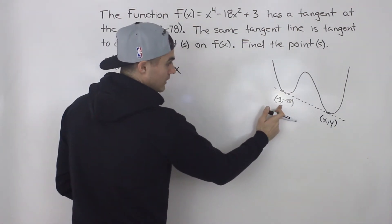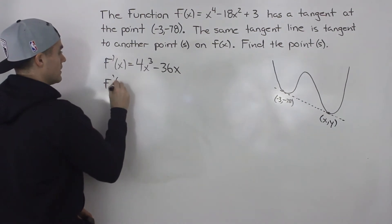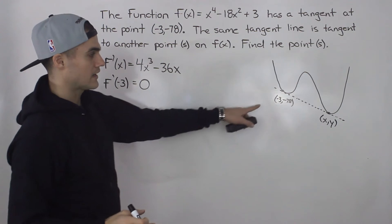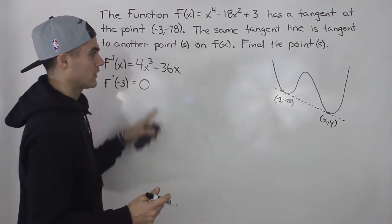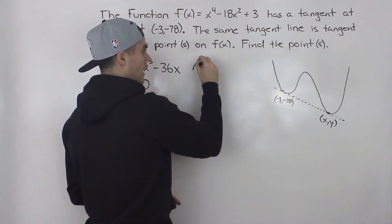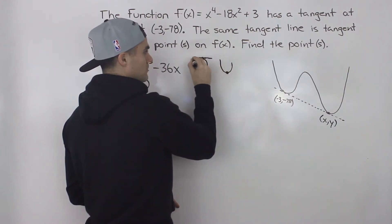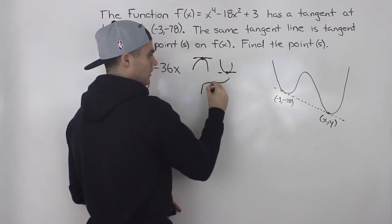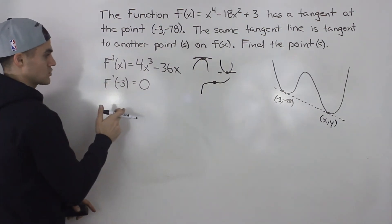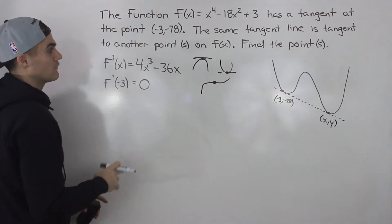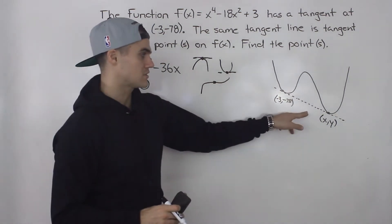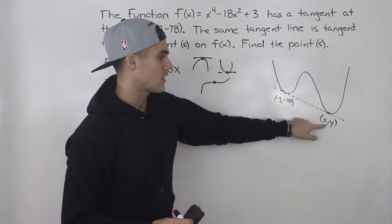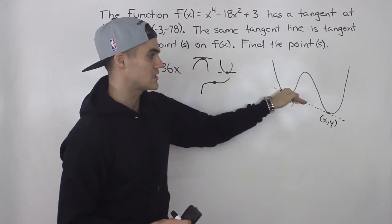Let's figure out the slope of the tangent at the point (-3, -78). If we plug in -3 into the derivative, we end up getting 0. So the slope of the tangent at that point is 0, meaning that point is most likely either a minimum, a maximum, or potentially a saddle point. Any of these three are potential results for that point on the function.